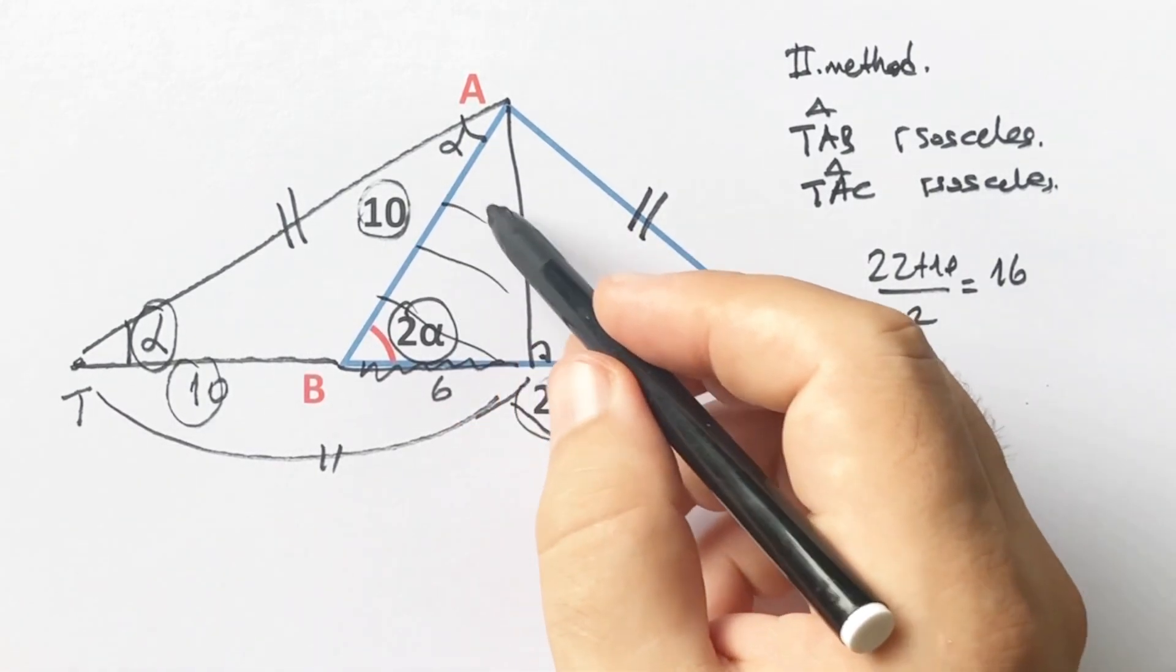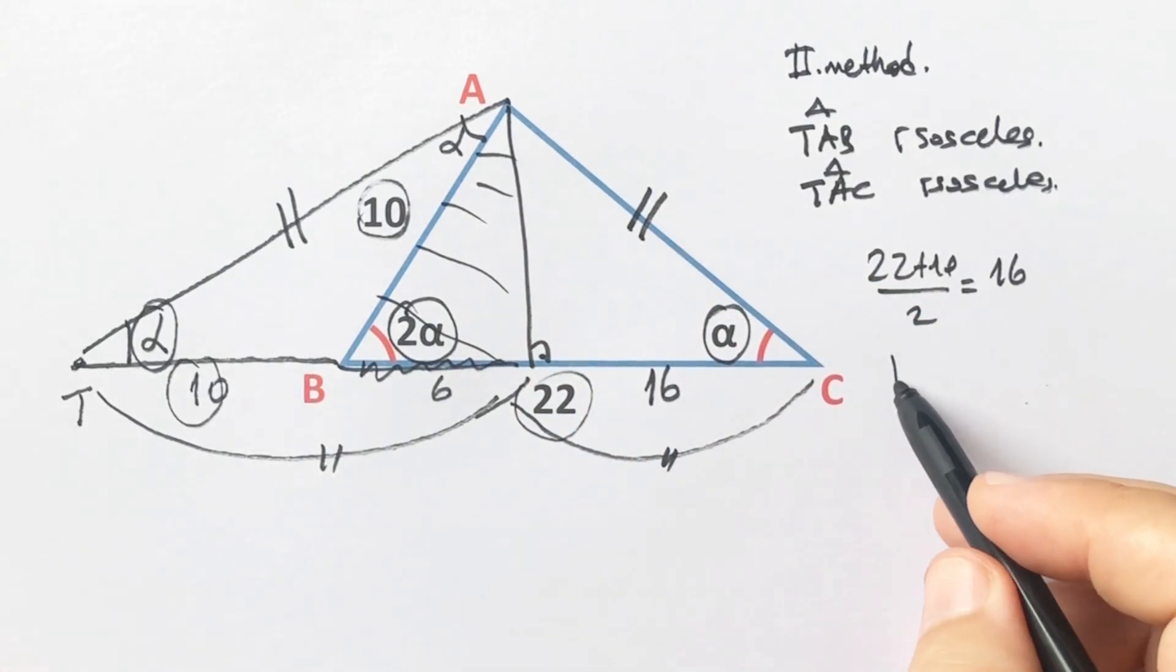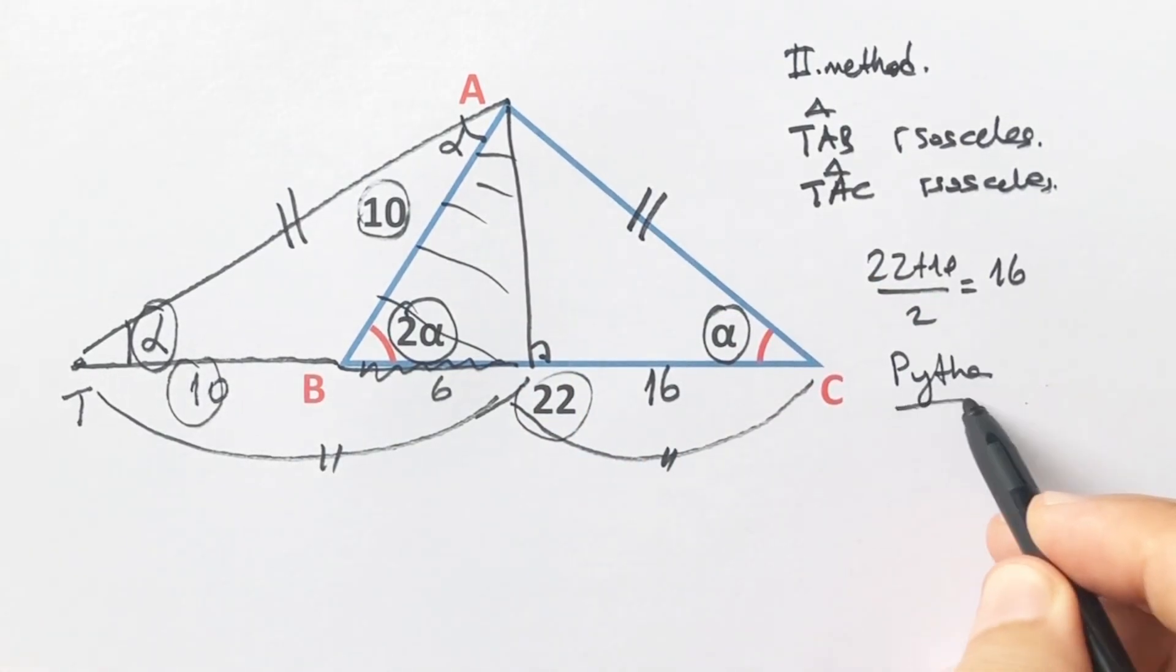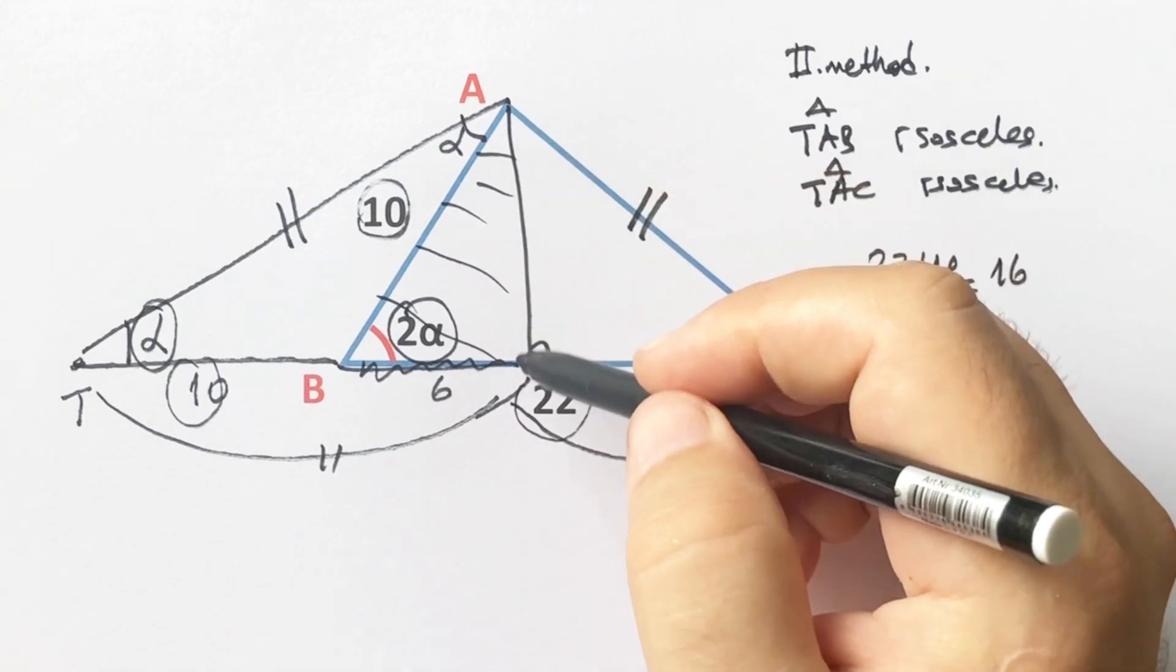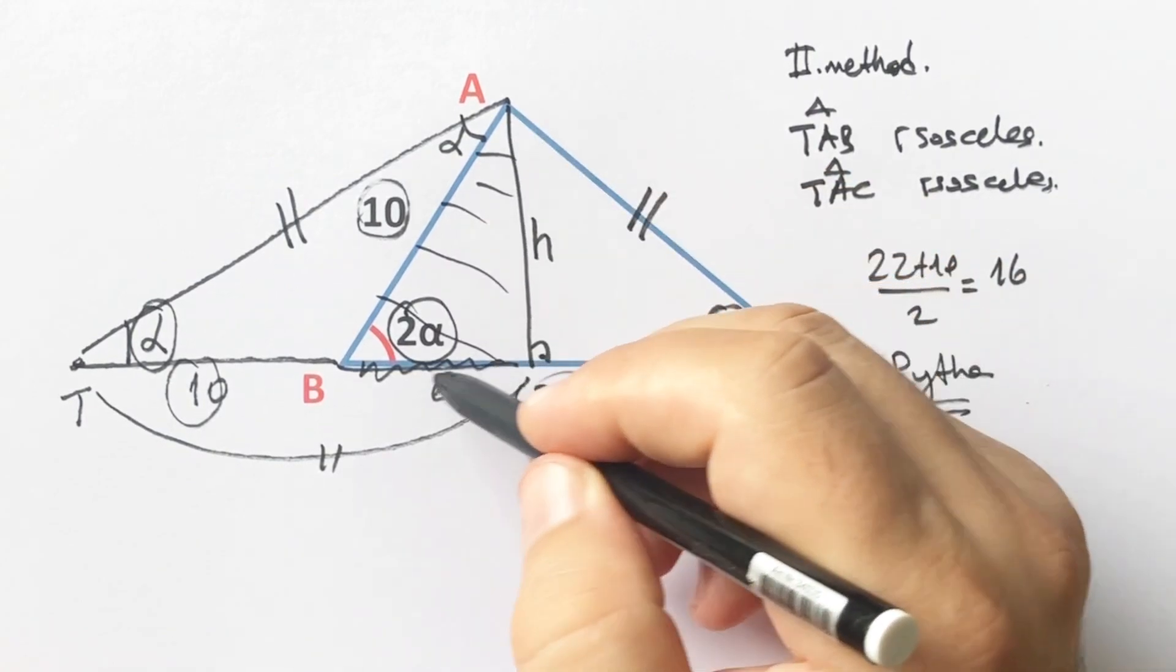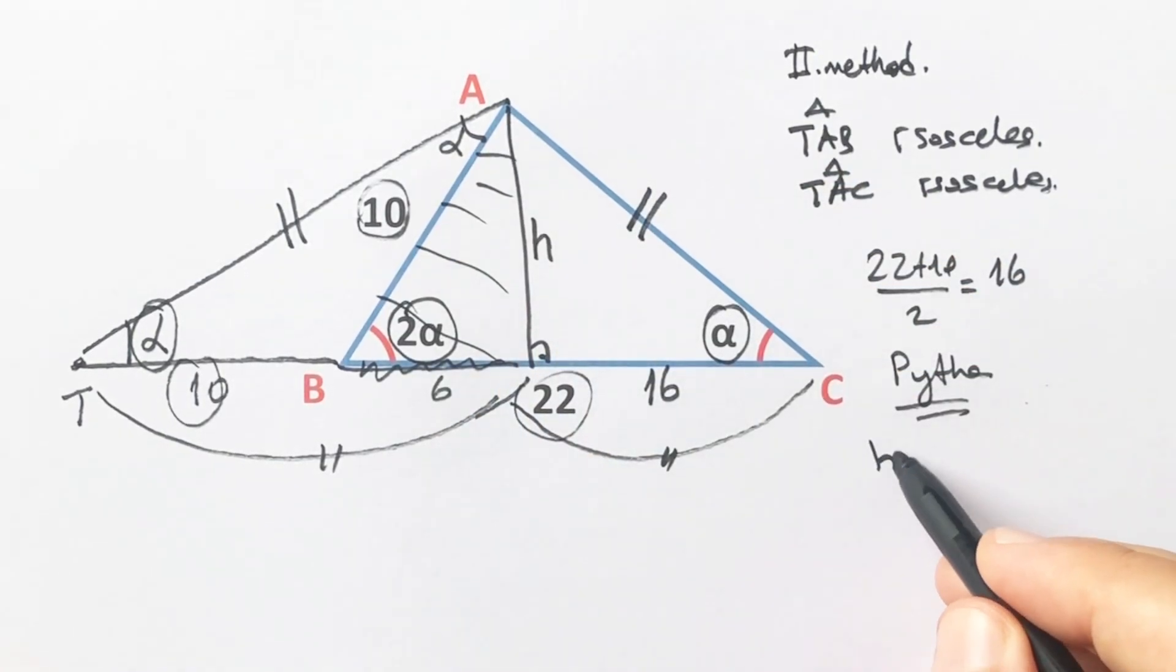If we apply Pythagorean theorem for this triangle, we get the height, right? Let's call here h. H squared plus 6 squared equals 10 squared. Therefore h equals 8 units.